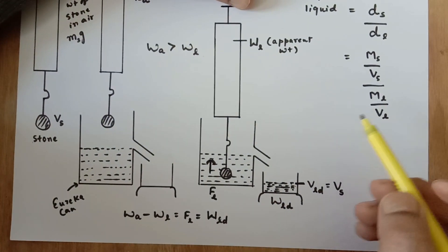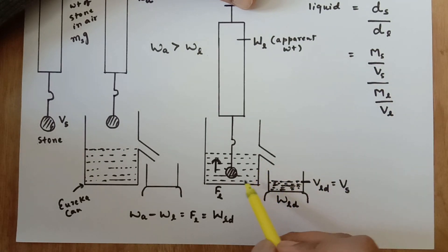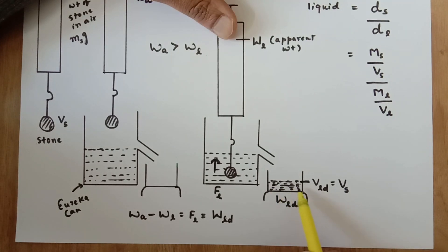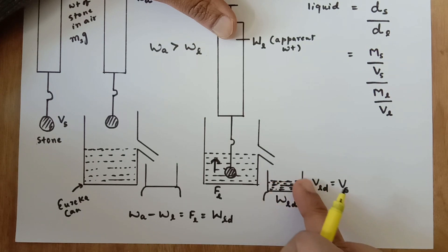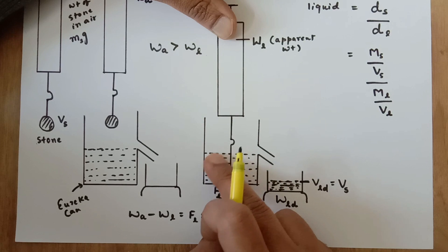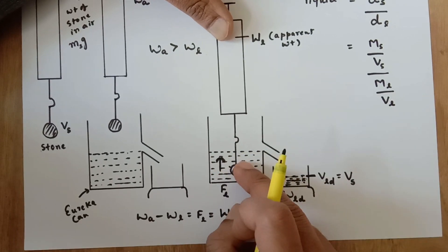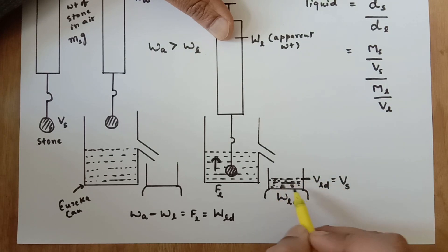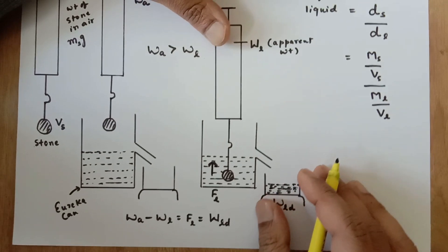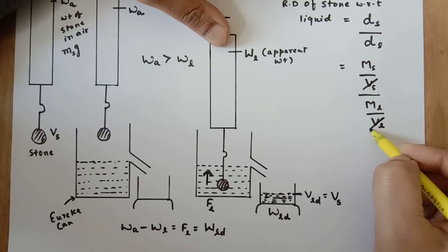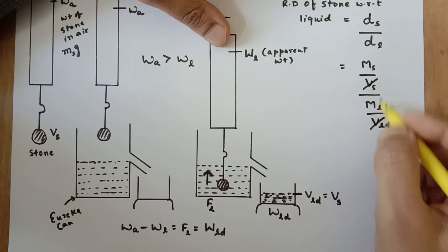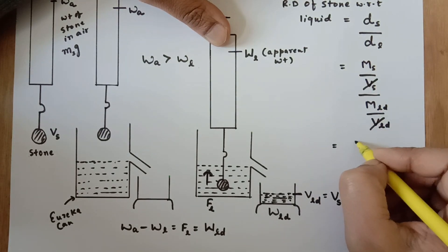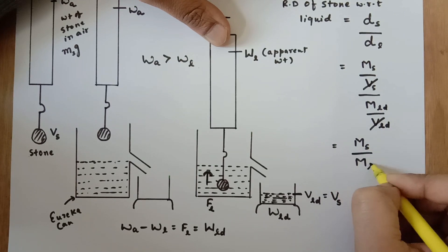The liquid is present inside the Eureka can and also in the beaker, but we want measurements. I know the weight and volume of the displaced liquid in the beaker, so I am going to use that liquid for mass and volume calculations — not the liquid inside the Eureka can. Since the beaker has graduations I know the volume of liquid displaced, and since it is on the weighing machine I also find the weight of liquid displaced. Since volume of liquid displaced equals volume of stone, I finally get: mass of stone upon mass of liquid displaced.